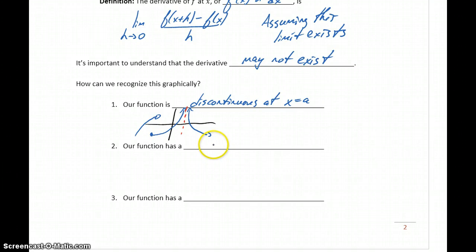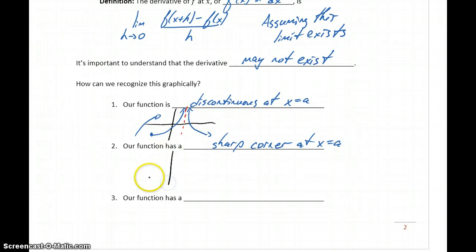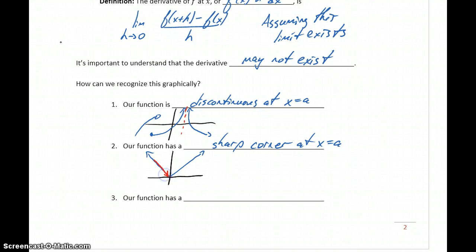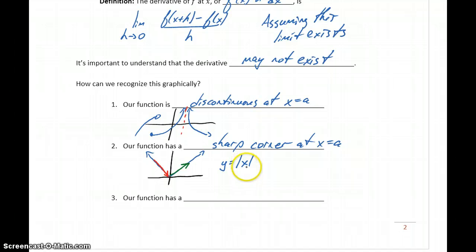Another place where the function would not be differentiable is if it has a sharp corner at x equals a. If we had a graph that came to a sharp corner, at that specific instant the function would simultaneously be decreasing and increasing. Since the derivative tells us the rate of change, the rate of change can't be both positive and negative at the same time, so the derivative does not exist. This applies any time we have a function of the form y equals absolute value of x — there will always be a sharp corner somewhere.